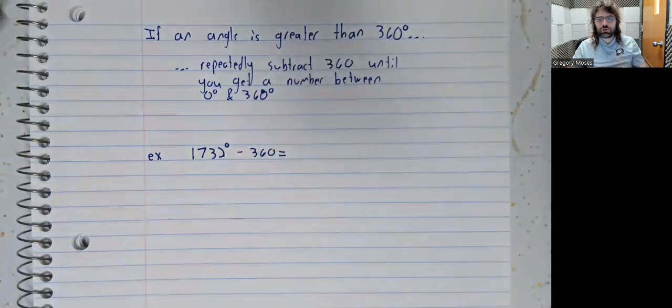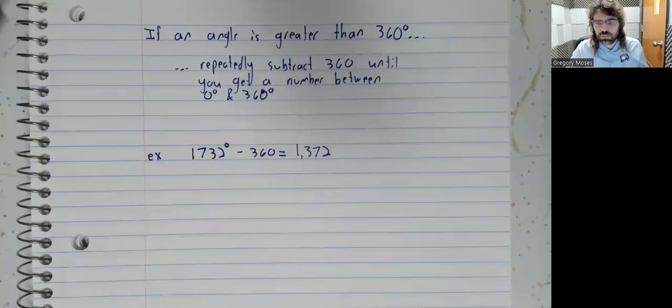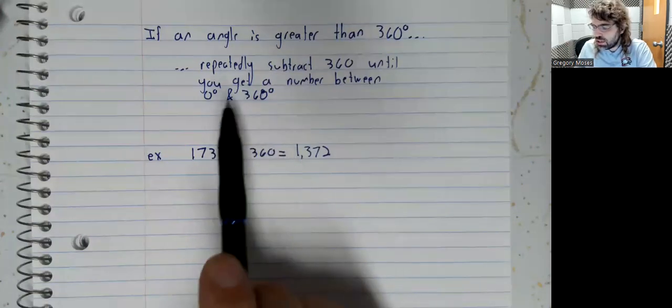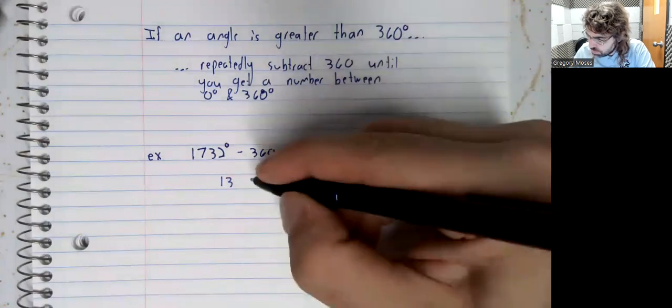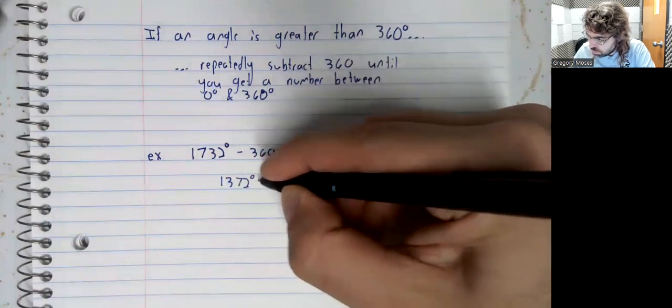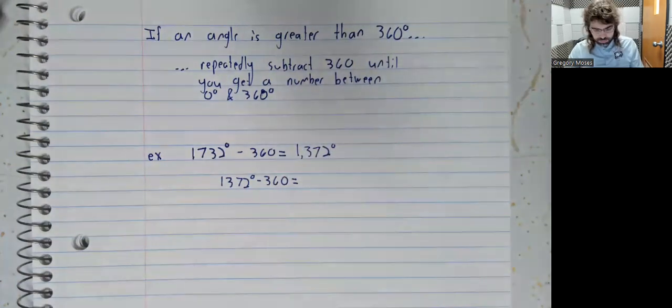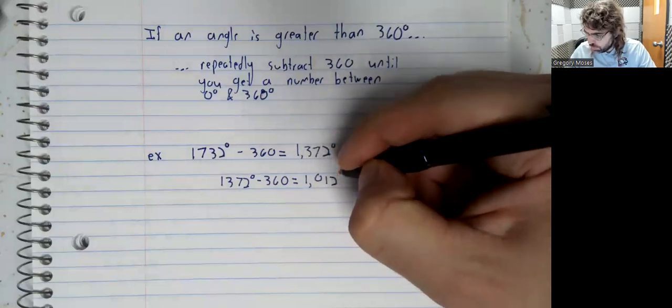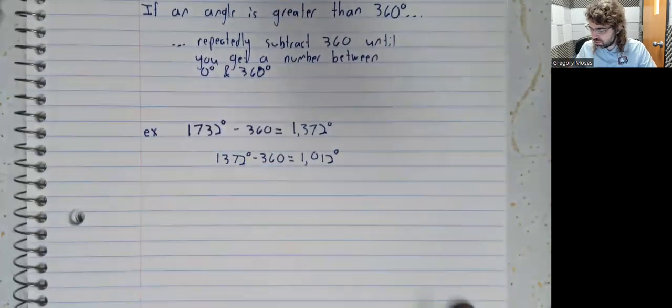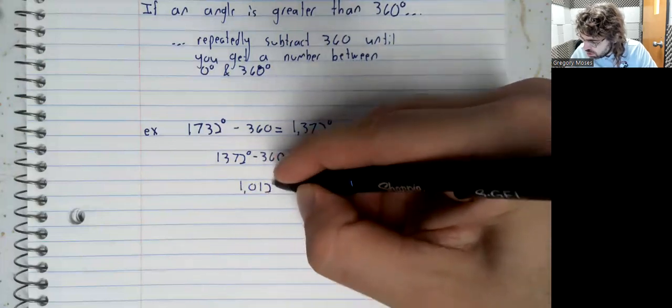According to what I've written, we should just be repeatedly subtracting. We subtract once, this number we get is not between 0 and 360. We subtract again. This number is still not between 0 and 360. I confess, this process can get a little tedious.